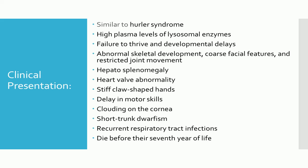Failure to thrive and developmental delays are obvious symptoms of this disorder. Some physical signs, such as abnormal skeletal development, coarse facial features, and restricted joint movement, may be present at birth. Children with mucolipidosis type 2 usually have enlargement of certain organs, such as the liver or spleen and sometimes even the heart valves.